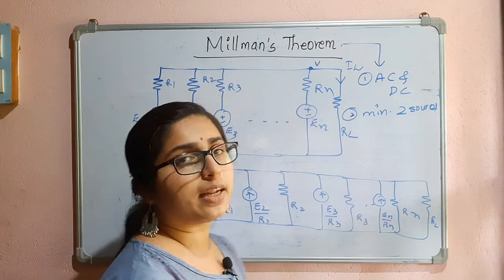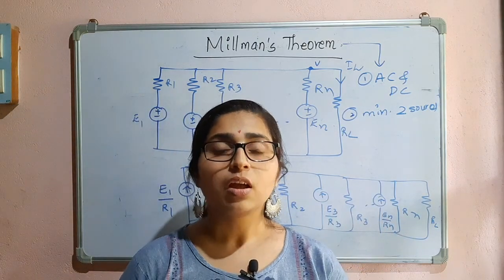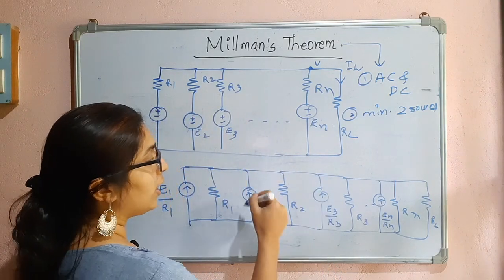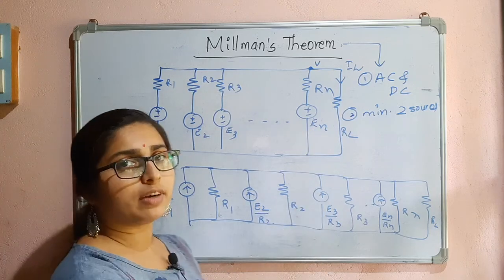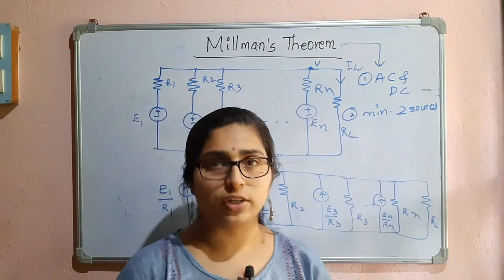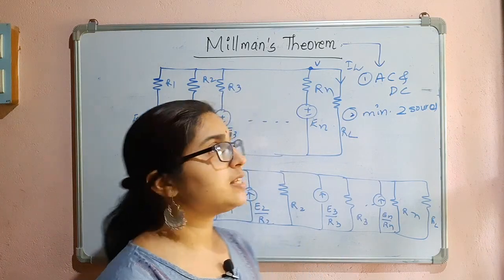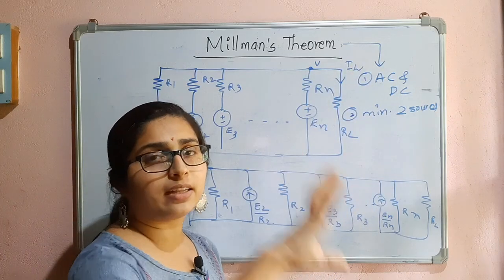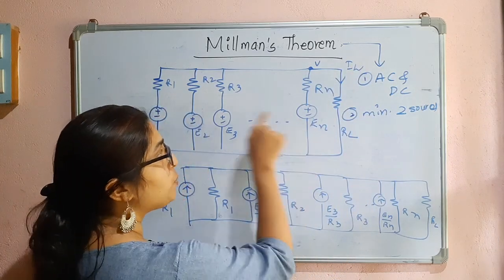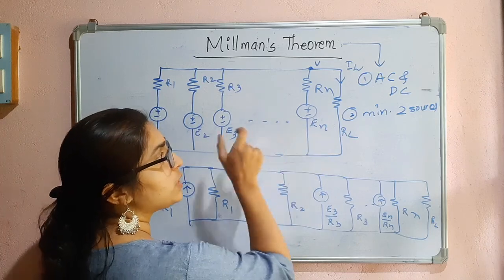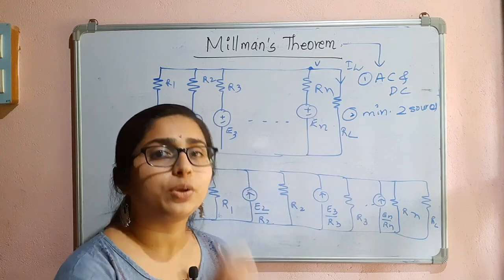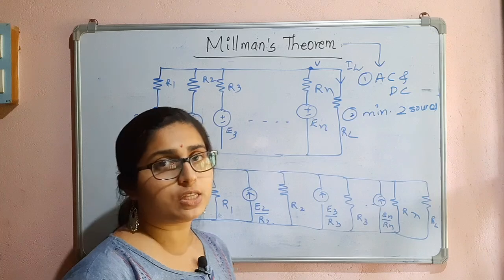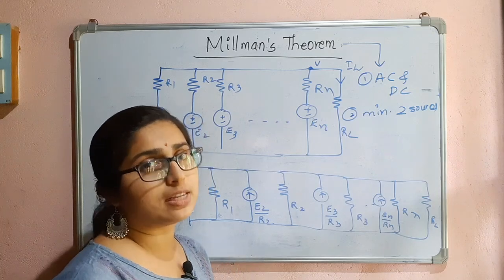Now, all the current sources are pointing in the same direction — upward — but this will not always be the case. You may have some current sources pointing downward depending on the polarities of the voltage sources. You must be very careful: don't just write the direct equation by seeing multiple sources in parallel. Always check the polarities of the voltage sources, otherwise you will arrive at the wrong answer.